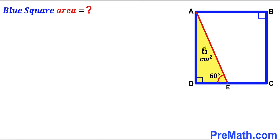Welcome to pre-math. In this video we have a yellow shaded right triangle ADE fully confined in a square ABCD, such that the area of this yellow shaded triangle is 6 cm² and the angle DEA is 60 degrees. Our task is to calculate the area of this blue square ABCD.